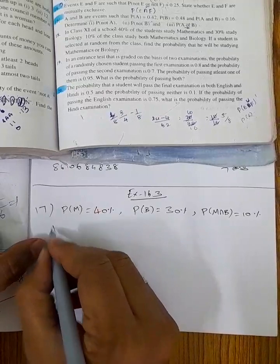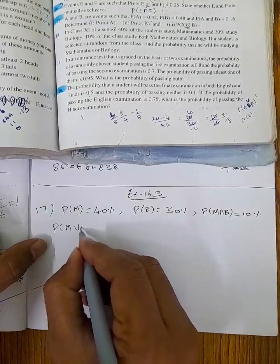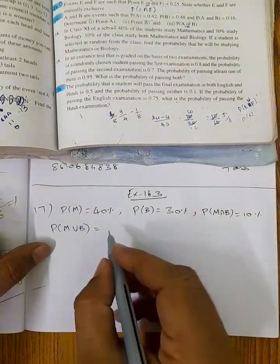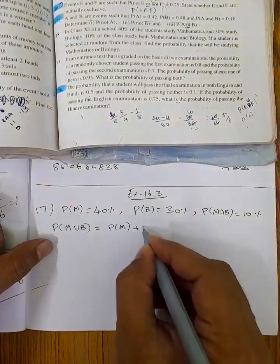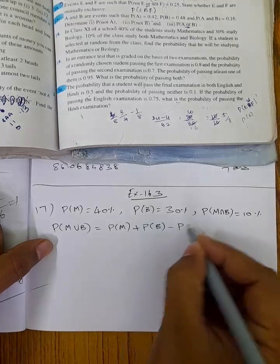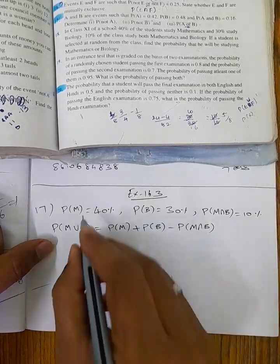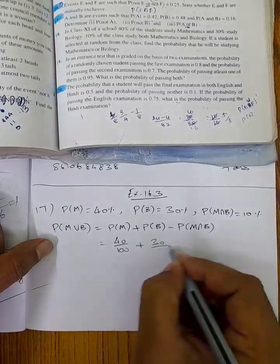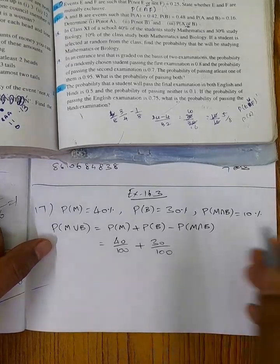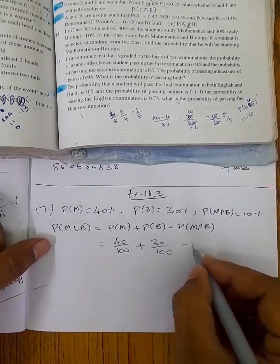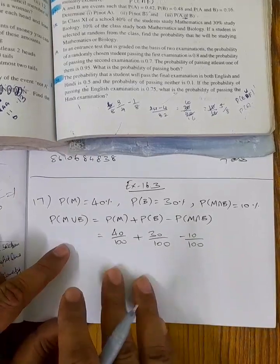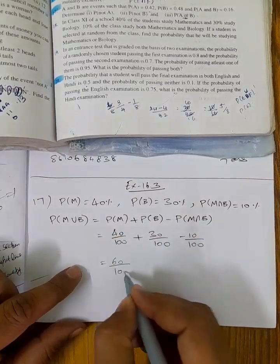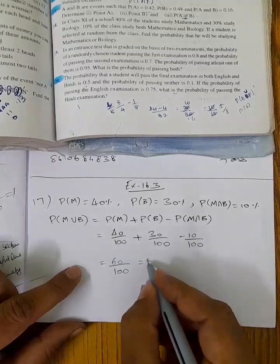So, P of M union B. Using the addition probability formula: P of M union B is equal to P of M plus P of B minus P of M intersection B. So, P of M is 40/100, P of B is 30/100, minus P of M intersection B which is 10/100. So, 40 plus 30 is 70, minus 10 is 60. So, 60 by 100.